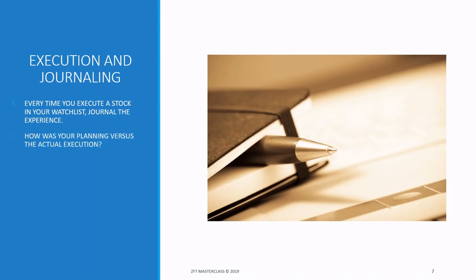Number two in journaling: how was your planning versus actual execution? That's very important because your plan and execution might differ significantly. Third: did you trade stocks that were not in your watchlist? There are two types — unplanned trades and template trades, and unplanned trades can fall under the category of template trades.